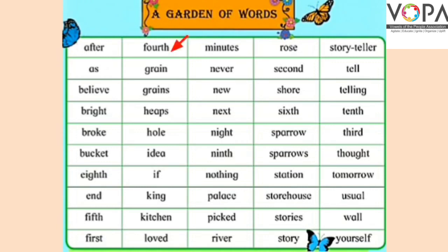'Fourth' — f, o, u, r, t, h. Fourth is also the ordinal form of four. 'Grain' — g, r, a, i, n. Grain یعنی اناج۔ 'Grains' — g, r, a, i, n, s. Grains یعنی بہت سارا اناج۔ 'Heaps' — h, e, a, p, s. کسی بھی چیز کا ڈھیر۔ 'Hole' — h, o, l, e. Hole یعنی سوراخ۔